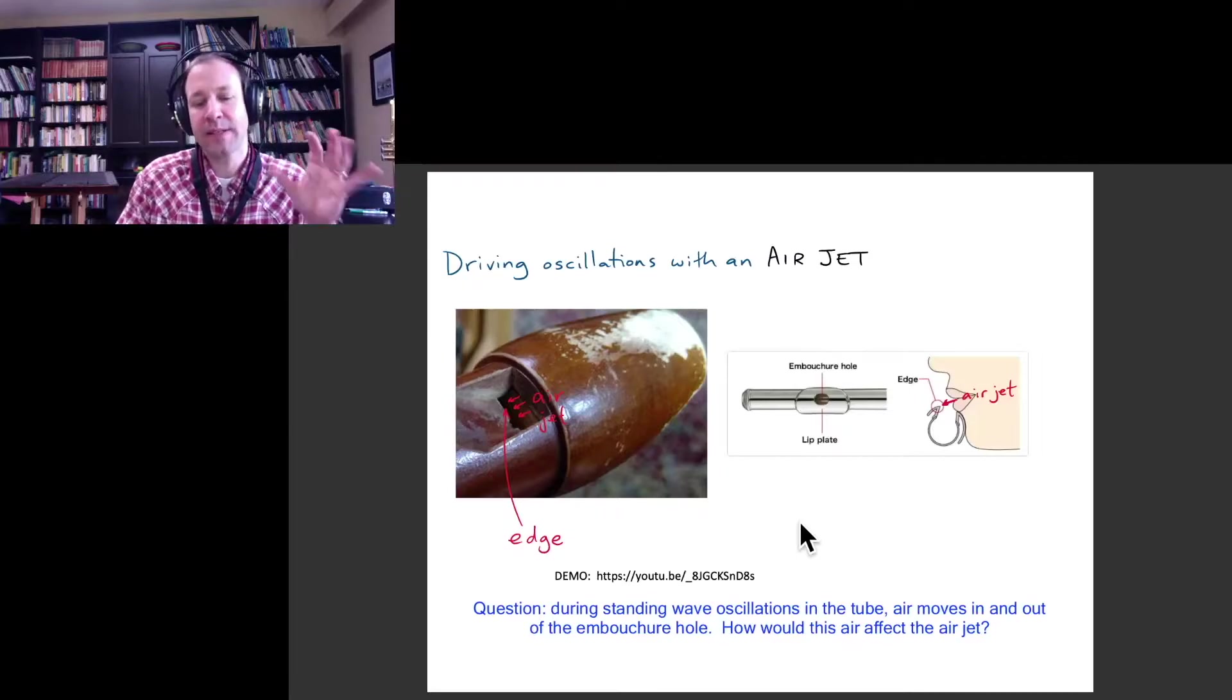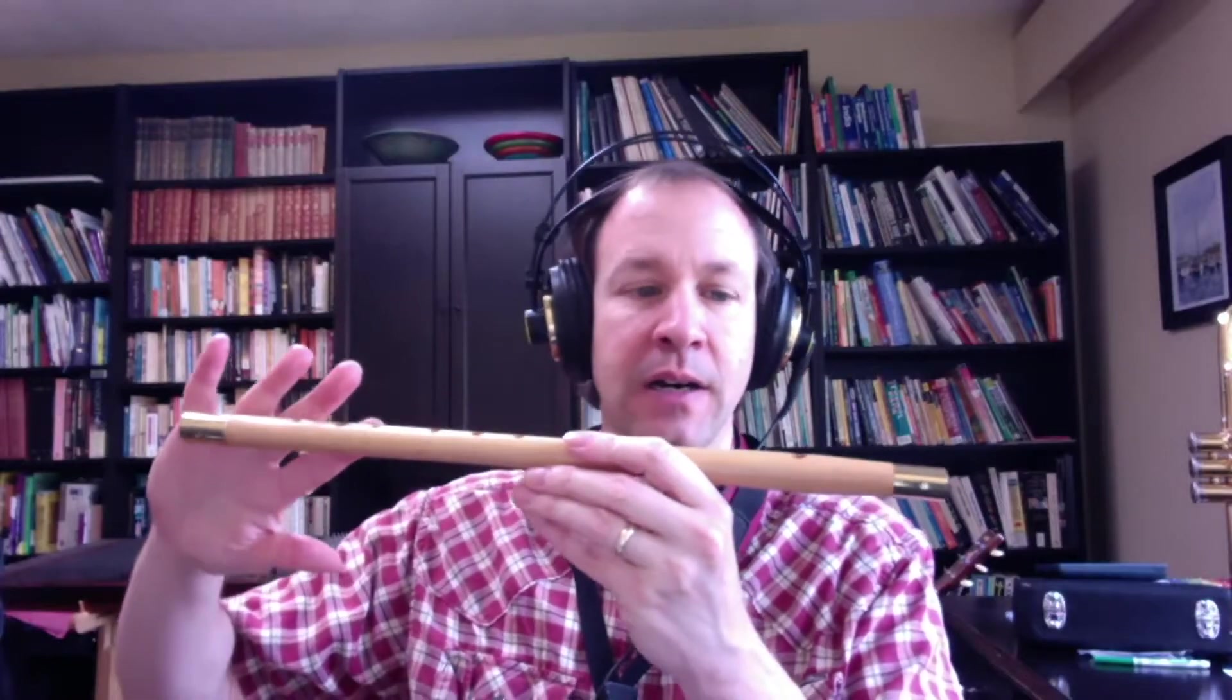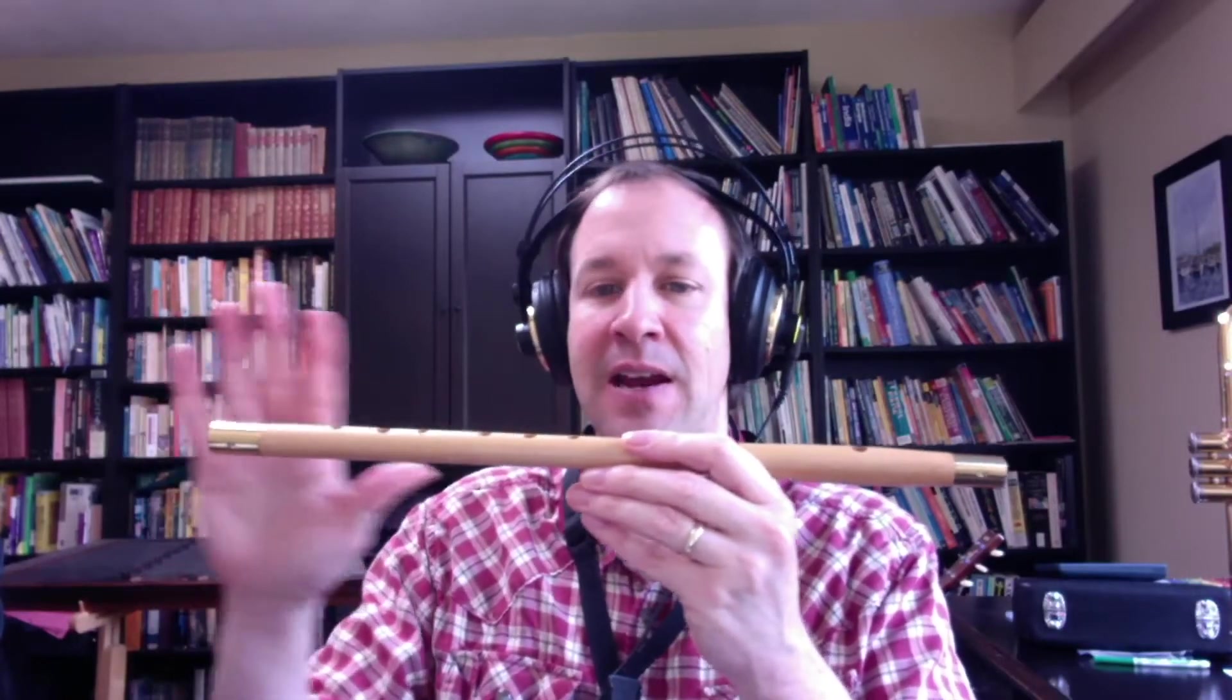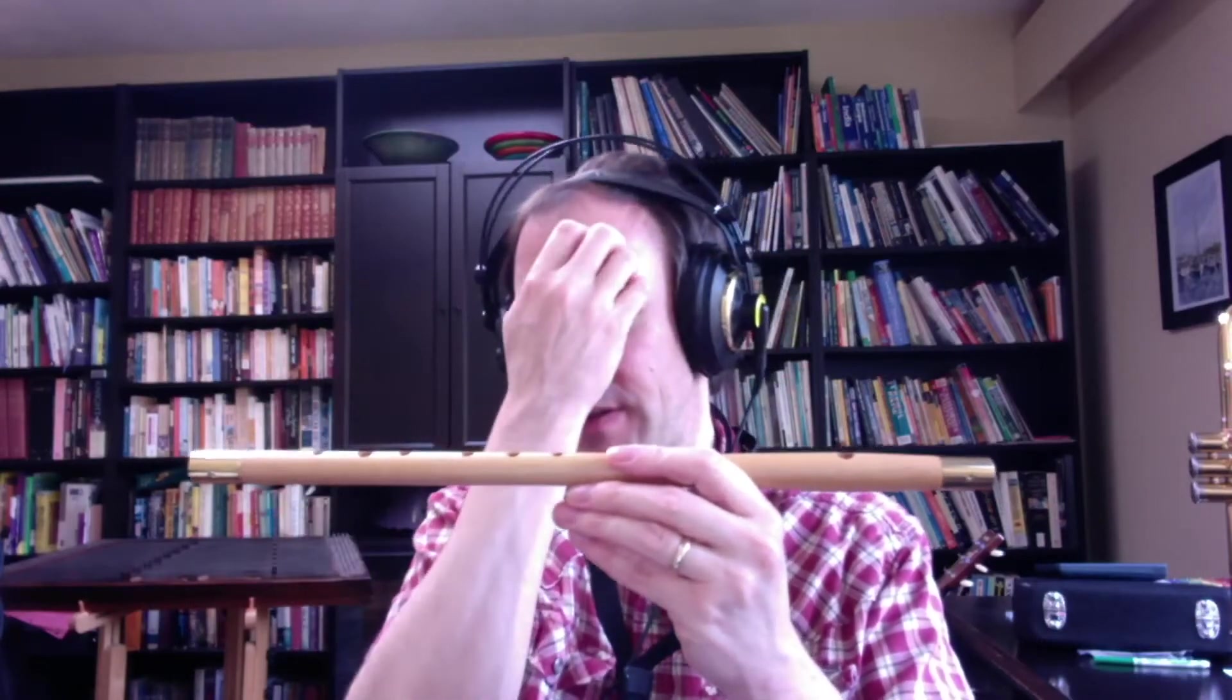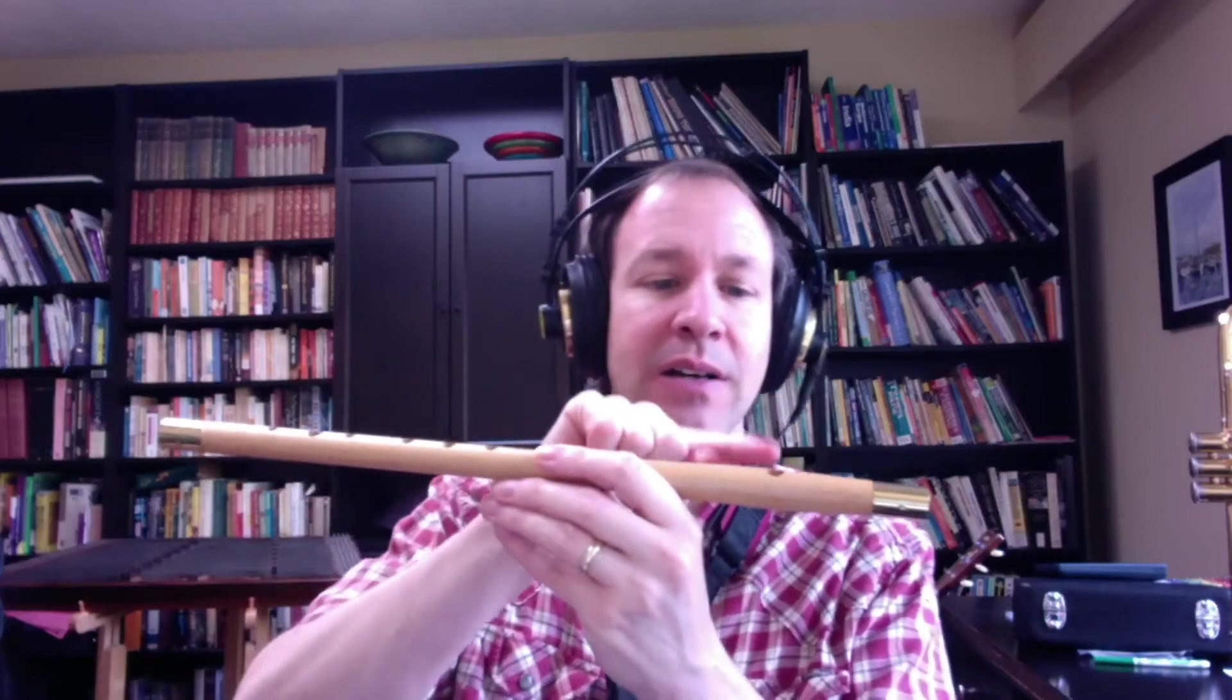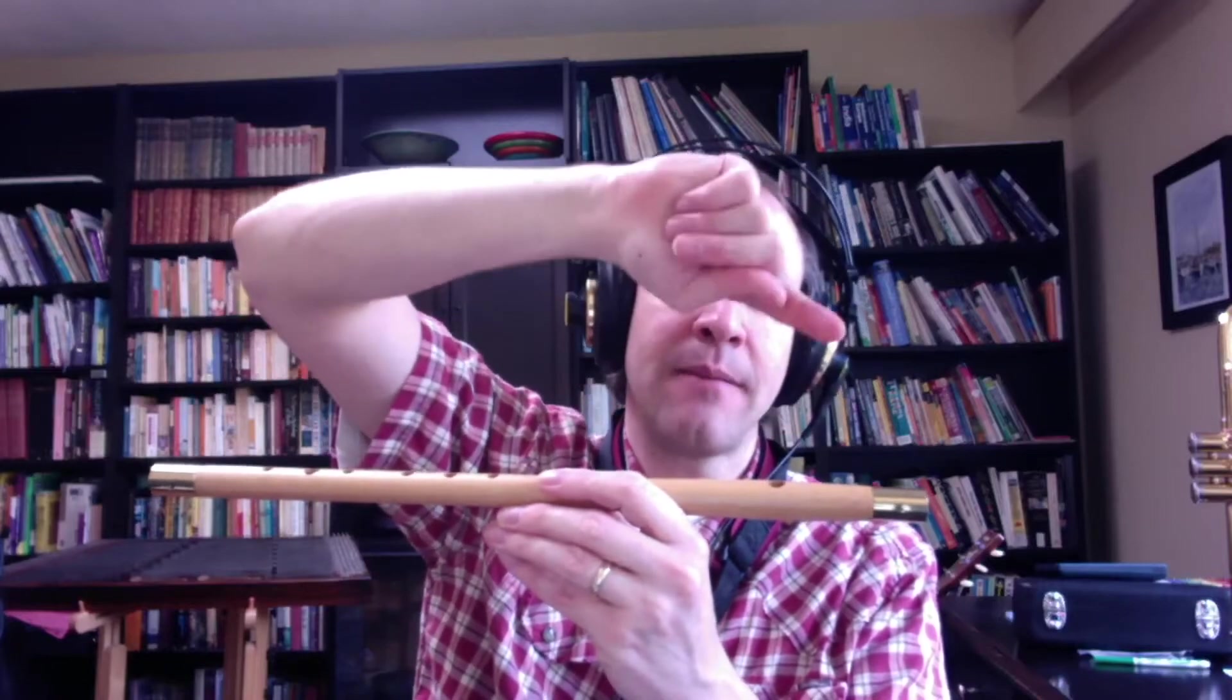So maybe just think about this a little bit. Let me just show you the flute and what's going on. So remember the standing wave inside the flute, you have air that's oscillating back and forth. And at the end, it's a large amplitude of oscillation, but also at this hole, because the flute is an open-open tube, there's a large amplitude.